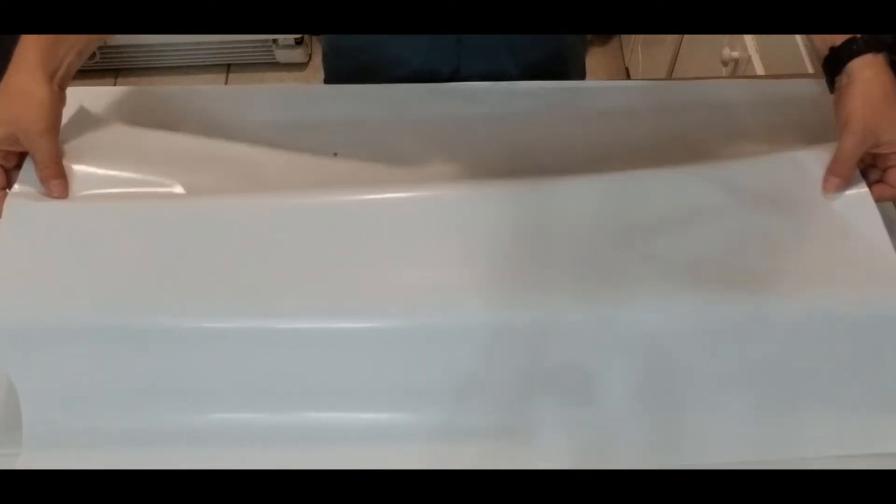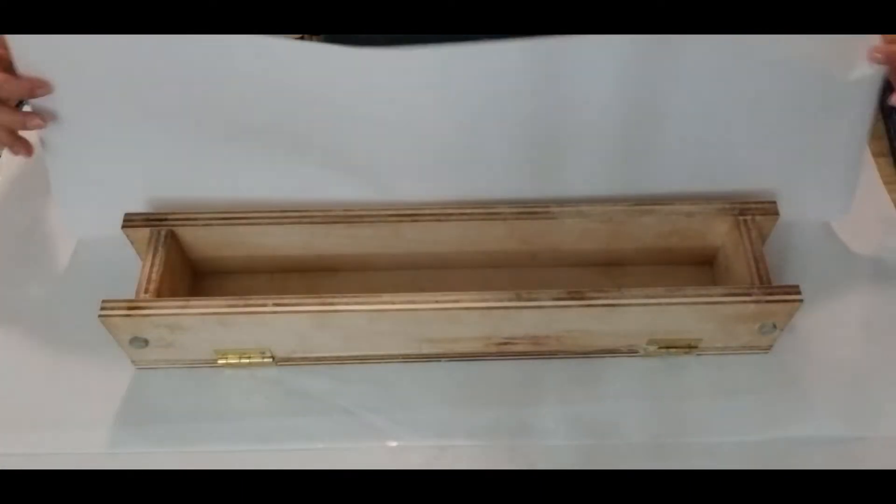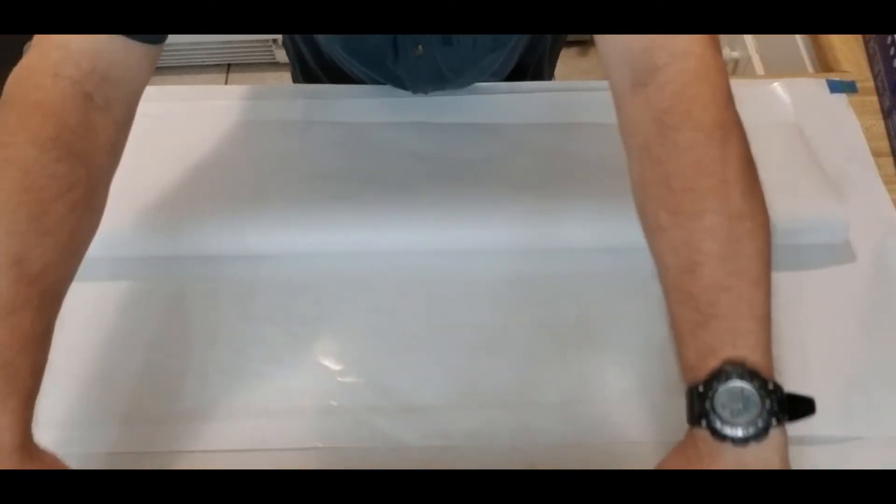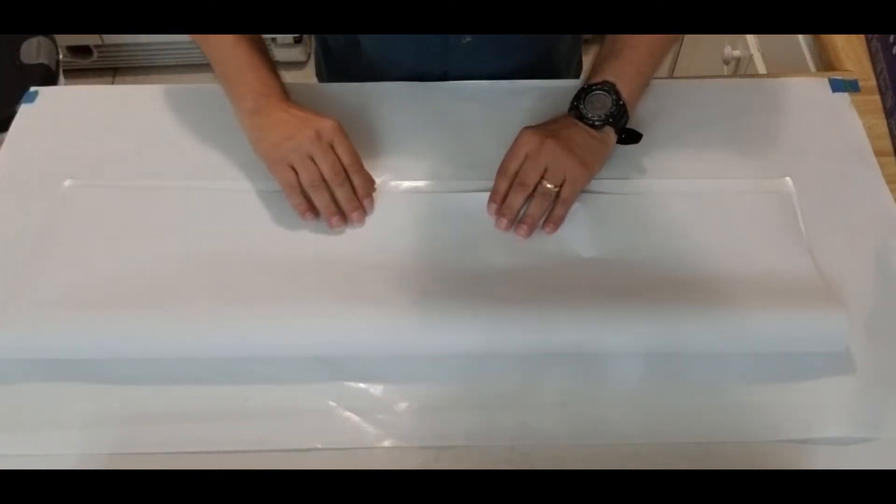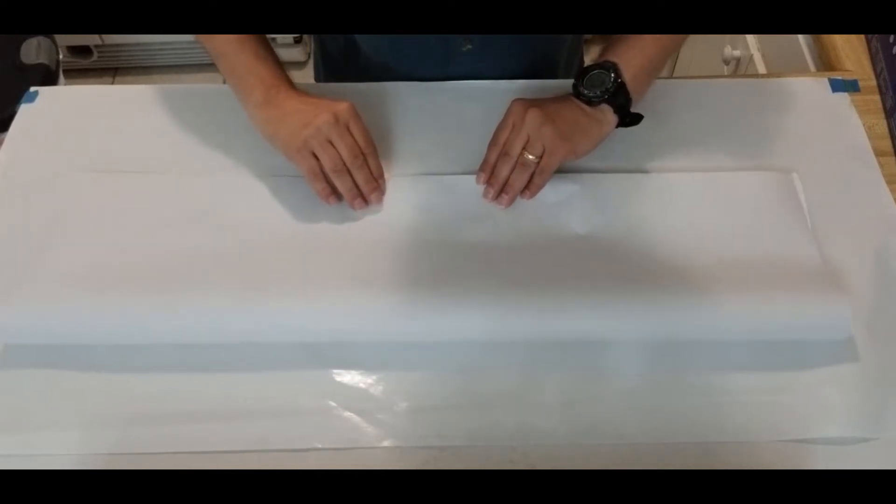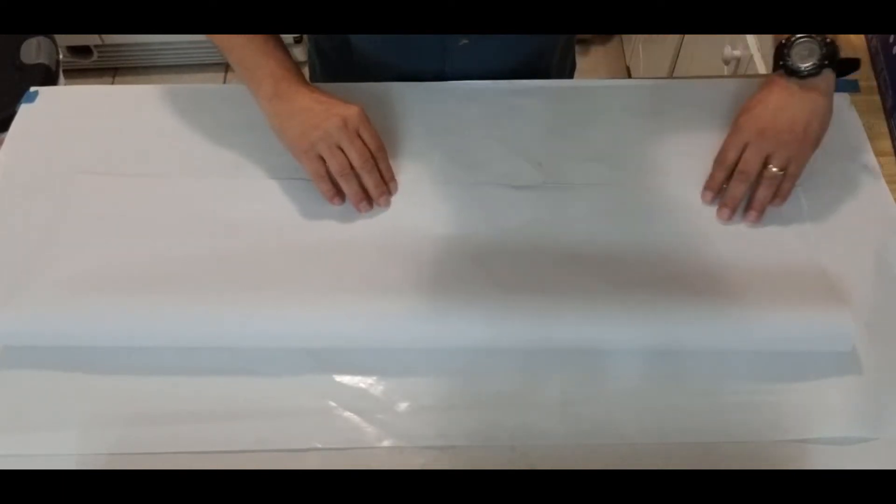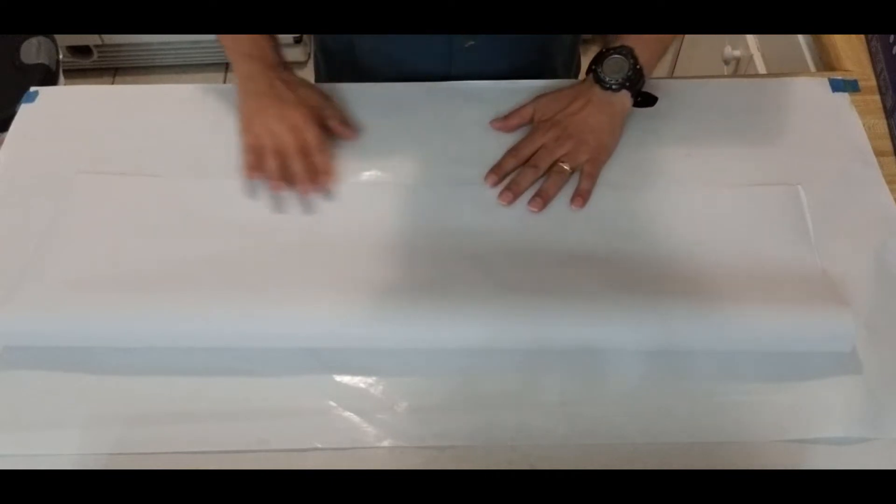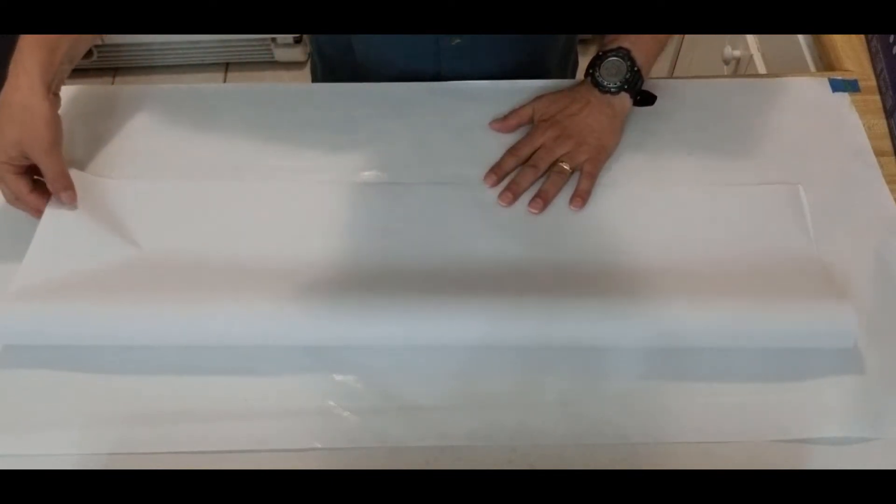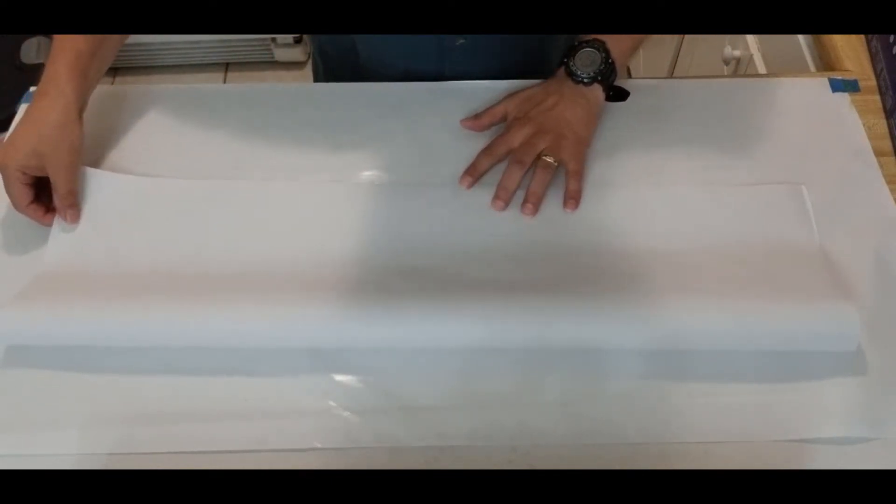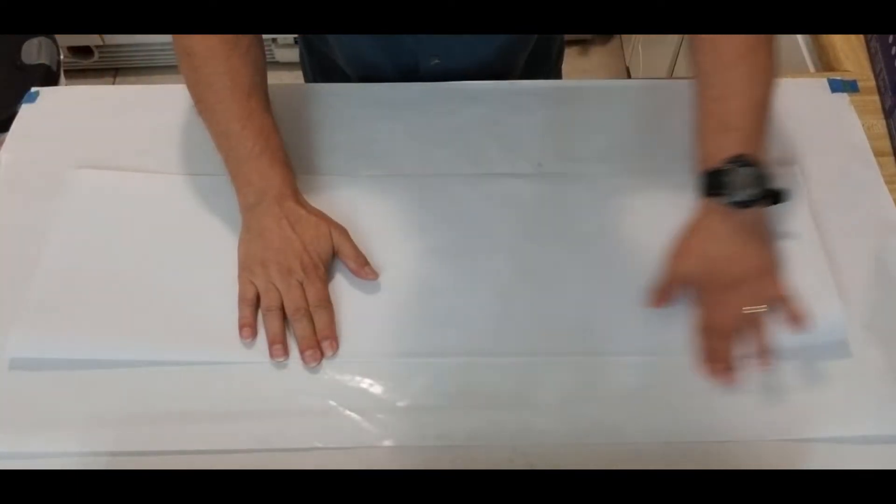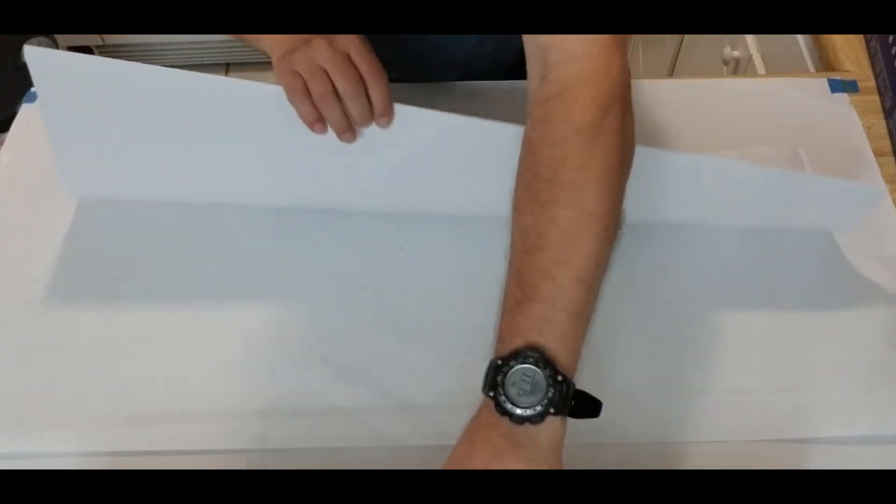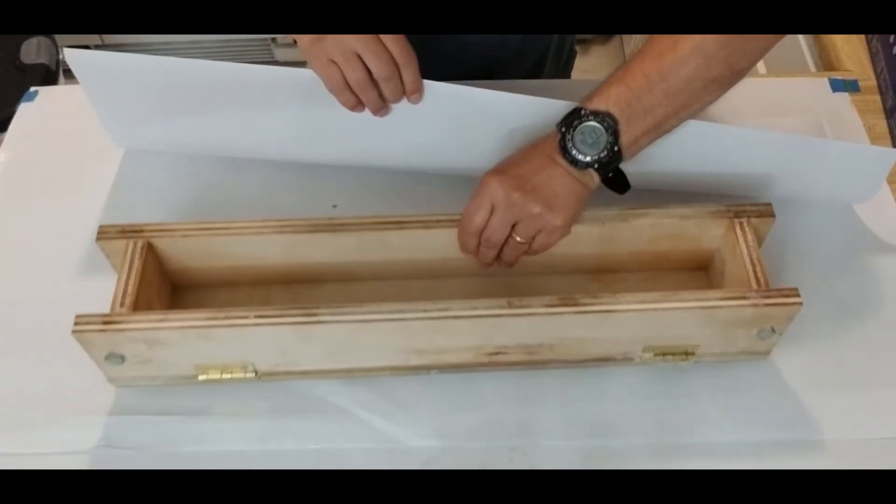Once I've got that actually cut out, I'll take my freezer paper and literally fold it in half because I want to get a nice crease right down the middle. That will allow me to center this over the mold and get pretty good accuracy with how to fold this.